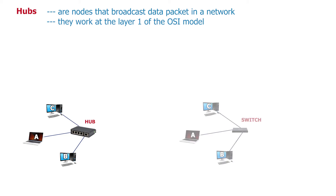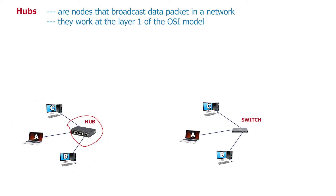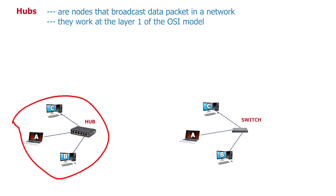Comparing switches to hubs: in a network connected by a switch, if host A sends a packet to host B, the switch will receive this packet and intelligently look at the MAC address of the destination host and send the packet to only host B. But in a network connected by a hub, the hub will receive the packet and broadcast it to all other hosts at the same time. This causes unnecessary traffic on the network as well as data insecurity. In a nutshell, this technology is deprecated.